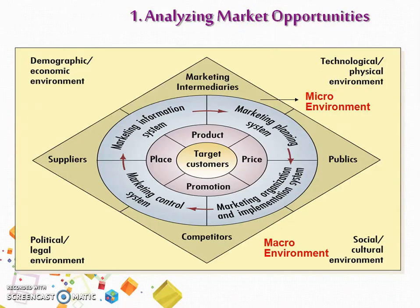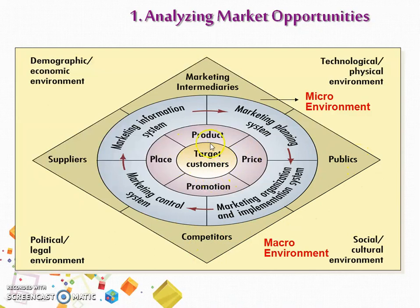Coming to the first step, which is analyzing market opportunity — the analysis is done at two levels: micro and macro. Micro level means the level which directly affects the company, such as intermediaries, suppliers, competitors, the public, and most importantly the customer. We also have to analyze the macro environment, which indirectly affects the company or the whole industry.